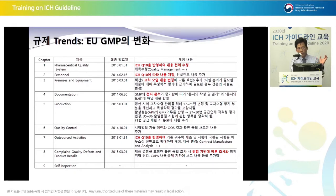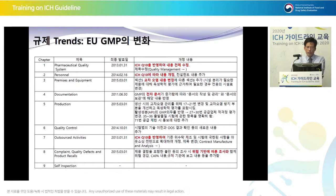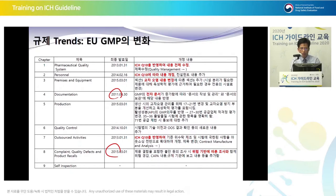So far I have talked about ICH Q TRIO guidelines. EU, US FDA, Japan, Australia, and other countries are major markets. Let's take a look at changes in EU-GMP. After ICH guidelines were implemented, from 2011 to 2015 — over four years — EU-GMP became aligned with ICH guidelines.